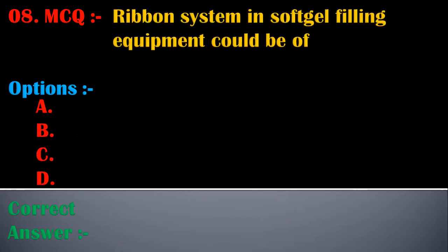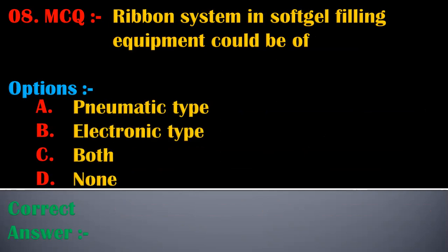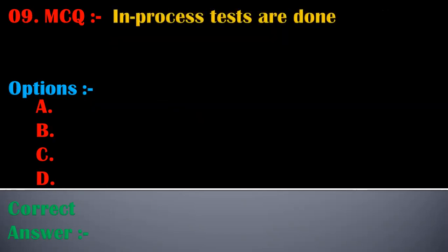The eighth MCQ is: the ribbon system in soft gel filling equipment could be of — options are pneumatic type, electronic type, both, or none. The correct answer is both. The ribbon system in soft gel filling equipment could be of both pneumatic type and electronic type.